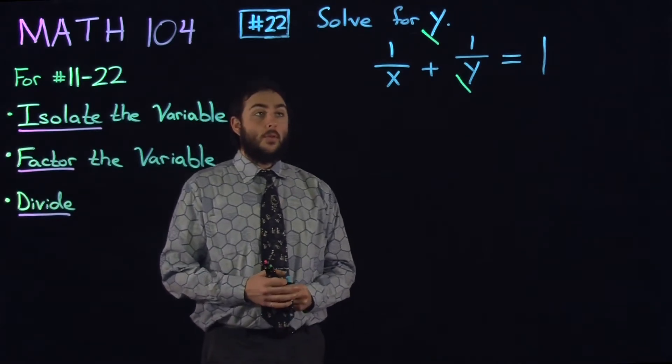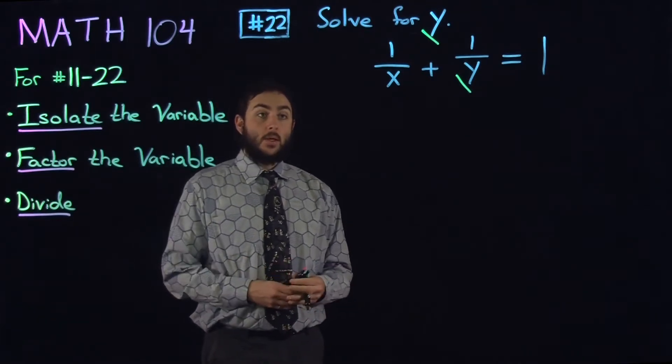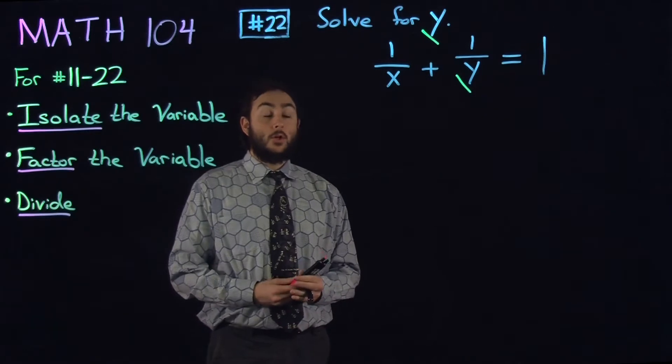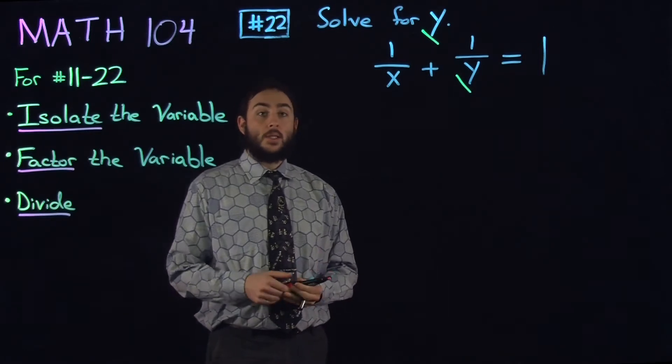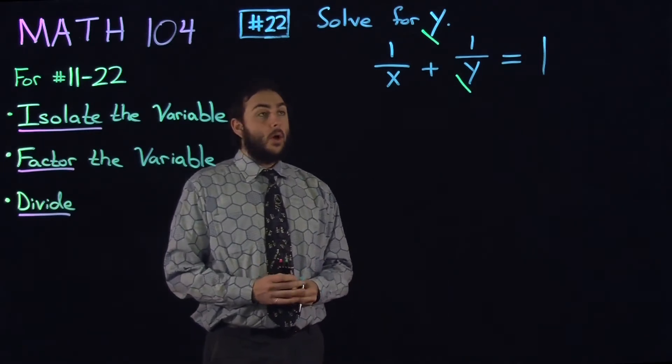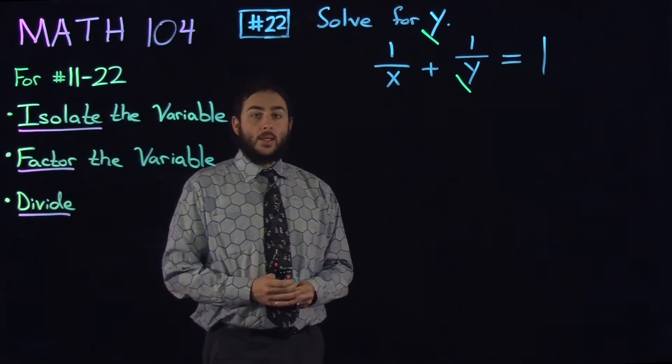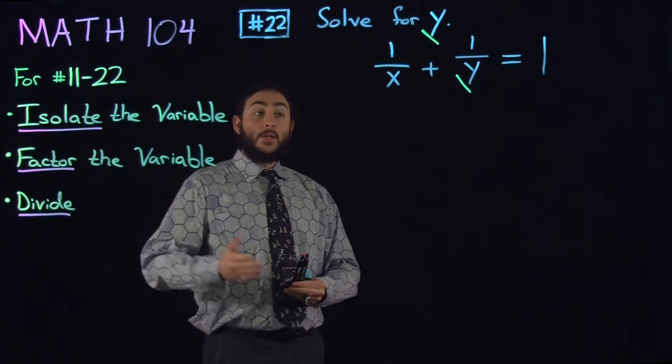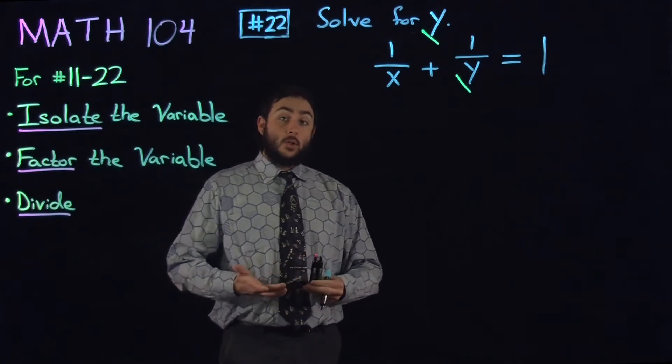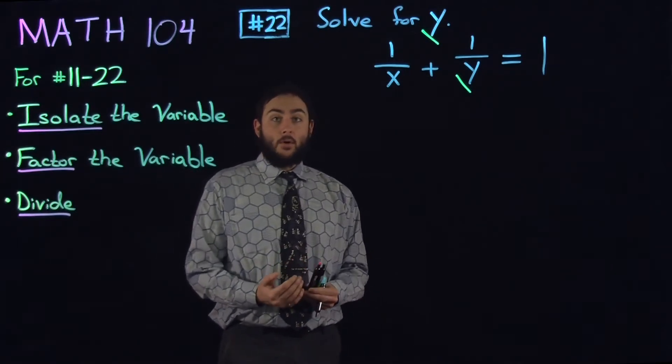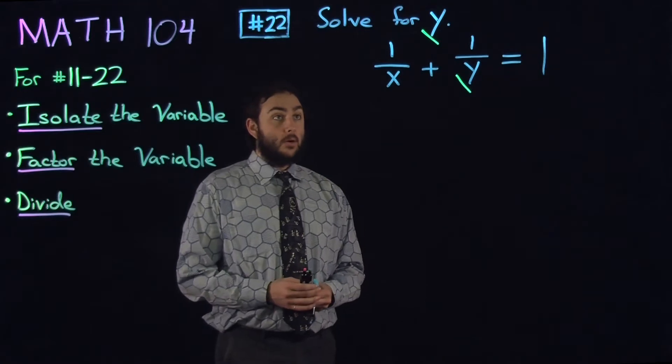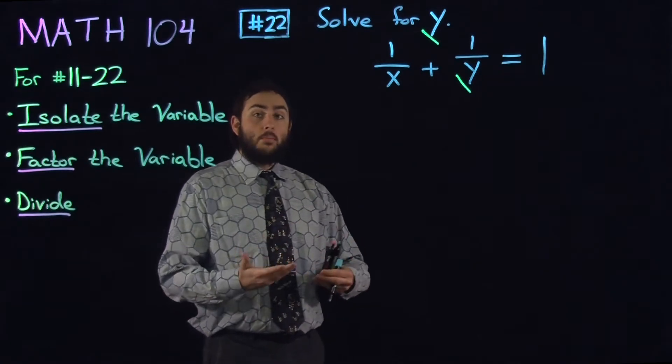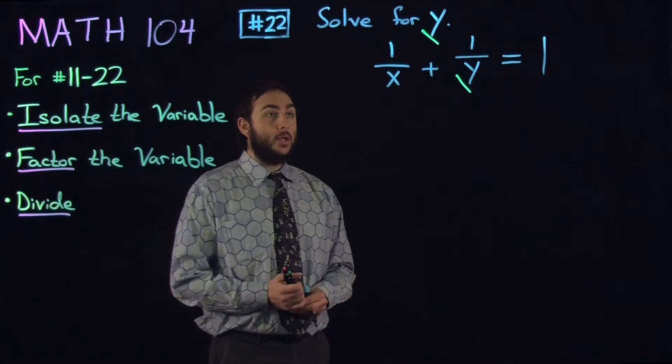This problem is slightly different than some of the ones we've seen because the term we want, y, is in the denominator. We'll have to keep that in mind as we go through this problem. But the first step is much the same, to isolate the variable. Essentially, what that means is we want to gather everywhere where y appears in this equation and put all of those terms on one side of the equation.